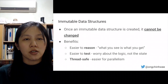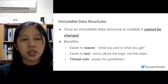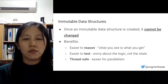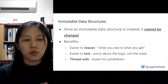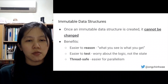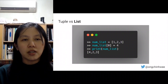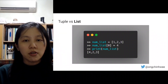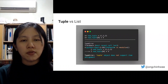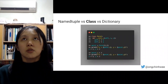The second functional design pattern involves immutable data structures. Once an immutable data structure is created, it cannot be changed. The benefits are: it's easier to reason about because what you see is what you get; it's easier to test because you worry about the logic, not the state; and it is thread-safe. For example, a list is mutable — you can alter elements — but a tuple is not: if you try the same operation on a tuple, you end up with an assignment error.